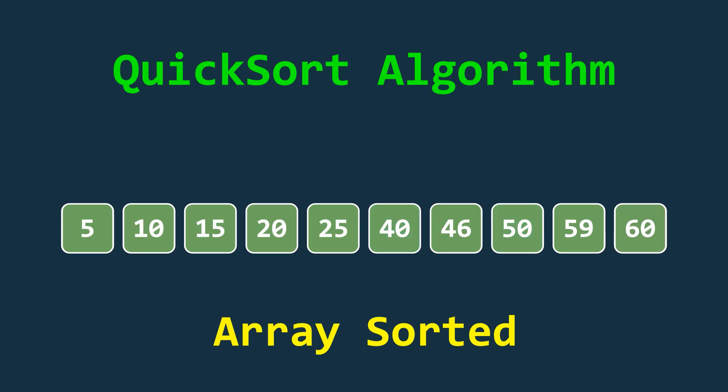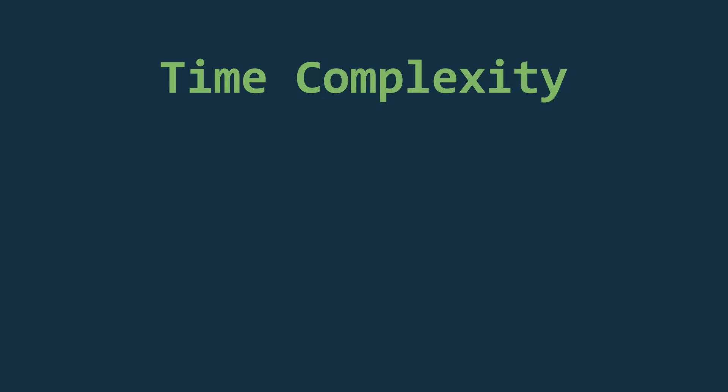Now, in the best or average case, that is when the array is divided into roughly two equal halves, the recurrence relation looks like this. Rearranging the elements around the pivot takes O(n) time and if we solve this recurrence, the total time complexity comes out to be O(n log n).